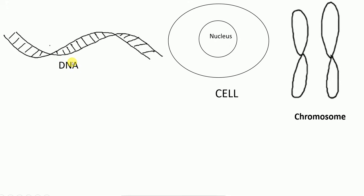Why does DNA need to become condensed? Because DNA is a long double helical structure and it cannot fit inside the small nucleus. Therefore it has to wrap around specific proteins, coil and super-coil, and condense into the form of a chromosome so that it can fit in the nucleus.